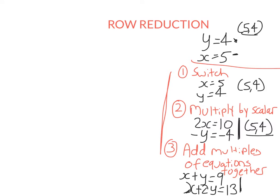That is generally our strategy when solving simultaneous equations, or even linear equations with one variable: we reduce to something easier to solve. Even with a simple equation like 2x plus 1 equals 7, we reduce it step by step. We can do the same with simultaneous equations represented as matrices. Each row in a matrix is its own equation, so I can switch rows, multiply a row by a scalar, or add multiples of rows together.